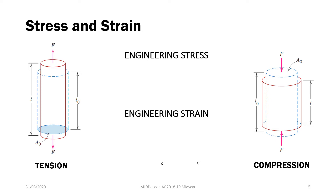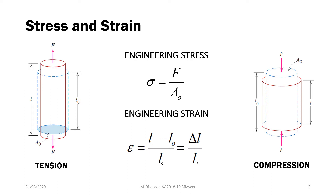In the discussion of mechanical properties, there are two important concepts we need to learn: stress and strain. For tensile and compressive loads, we define engineering stress — usually represented by the Greek letter sigma — as force over A₀, where A₀ is the initial area of our specimen. Engineering strain, epsilon, is equal to delta L over L₀, where delta L is the change between the final and initial lengths, and L₀ is the initial length.